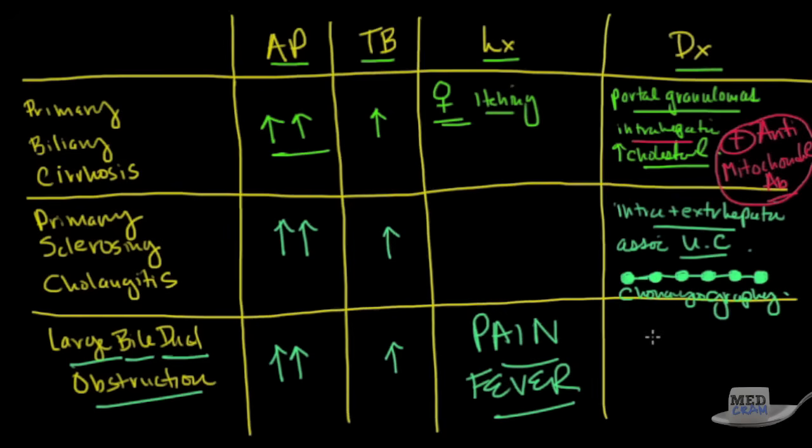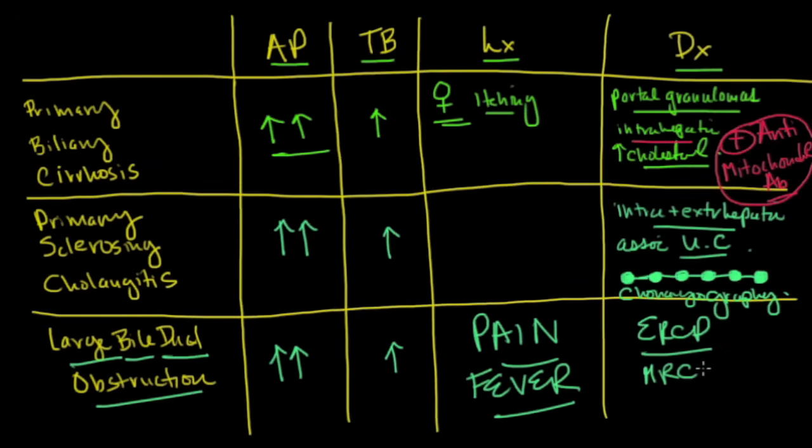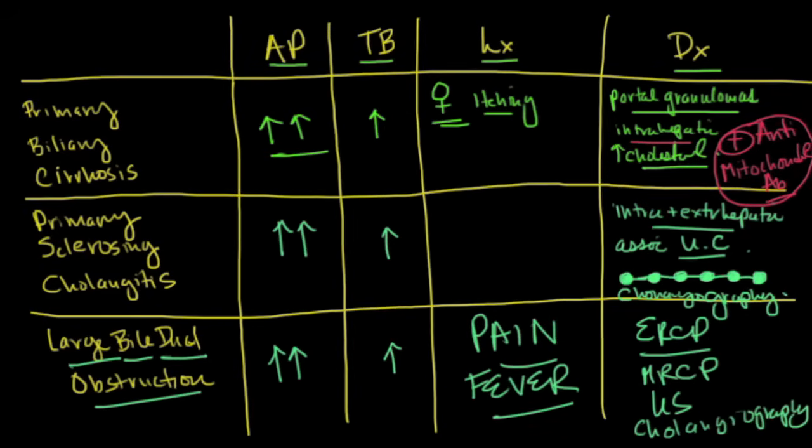And the diagnosis here, again, is you can do cholangiography. You could also do ultrasound. You could do ERCP. That's endoscopic retrograde cholangiopancreatography, which is a long word. So ERCP. You can do an MRCP. That's where you use magnetic resonance imaging. You can do ultrasound. You can do cholangiography.